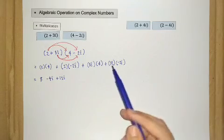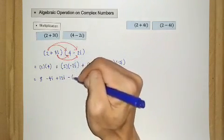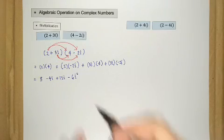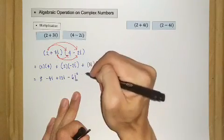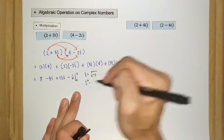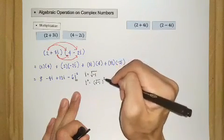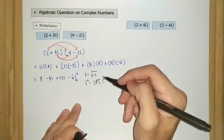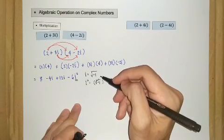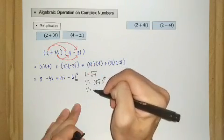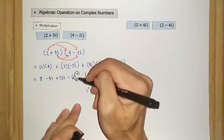Let me remind you that i is equal to the square root of negative 1. So i squared equals negative 1. Therefore the last term, negative 6i squared, becomes negative 6 times negative 1.